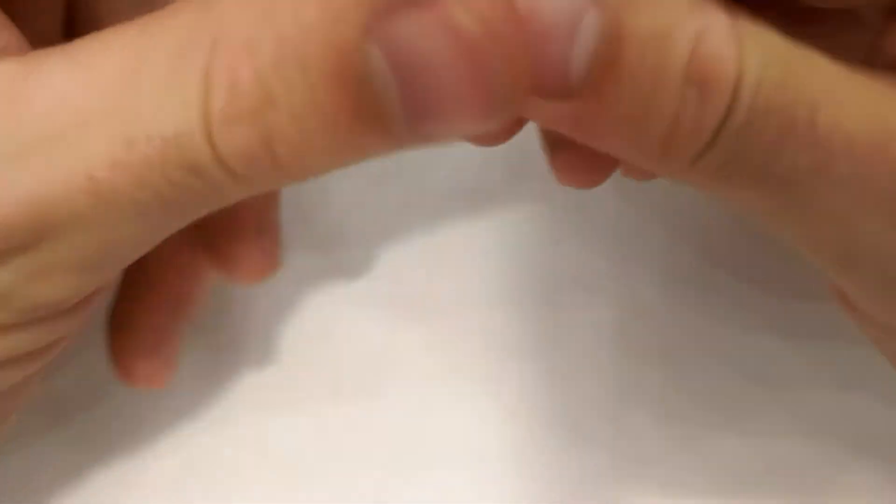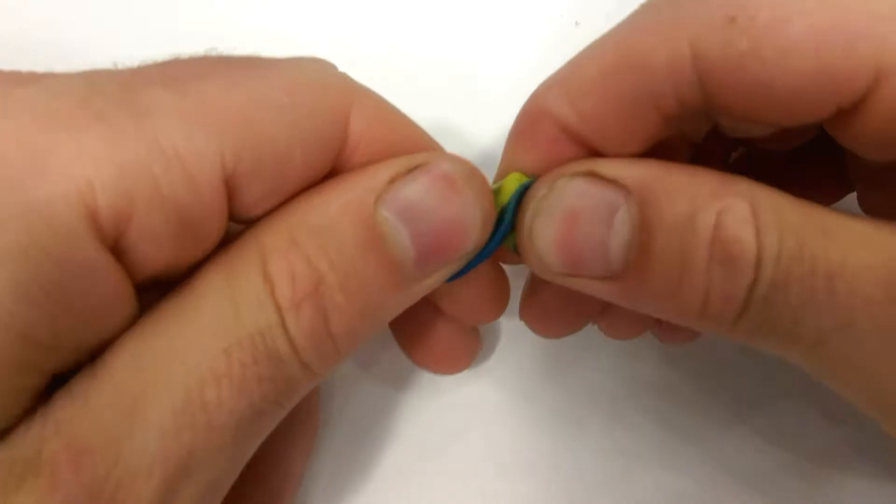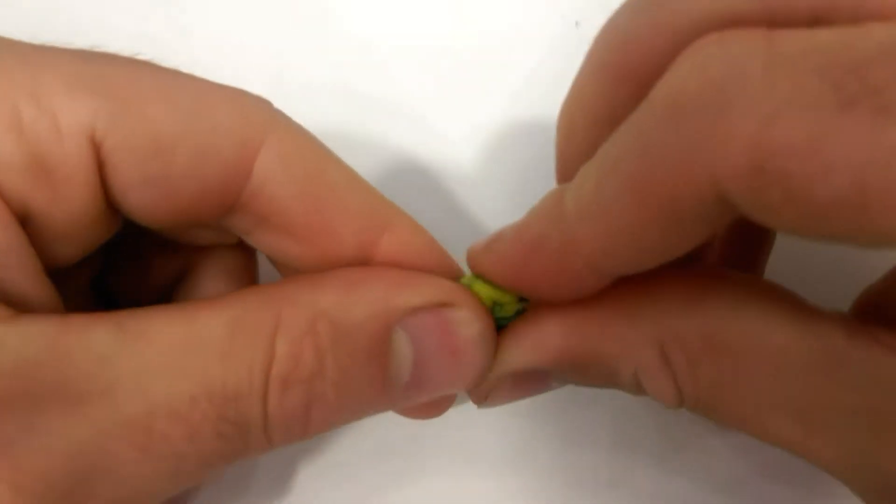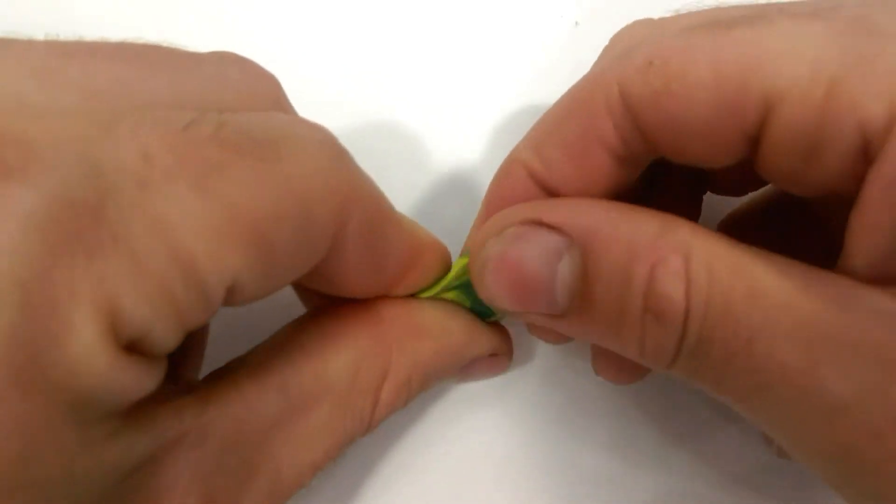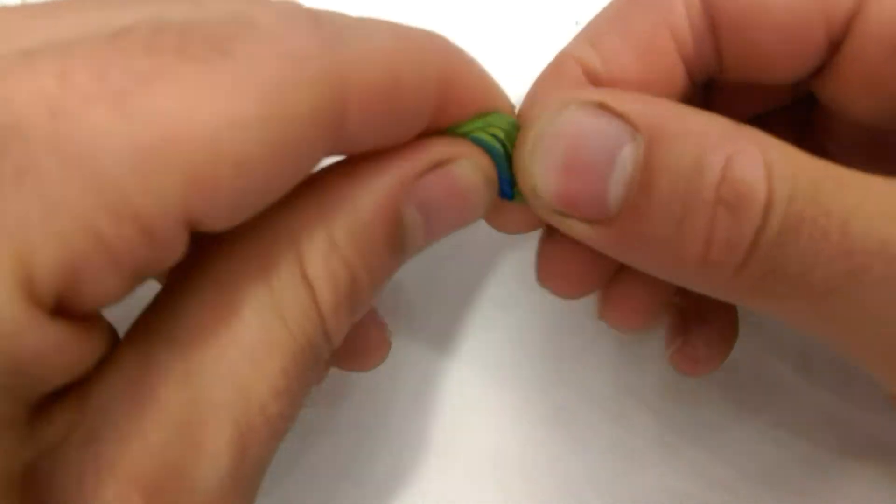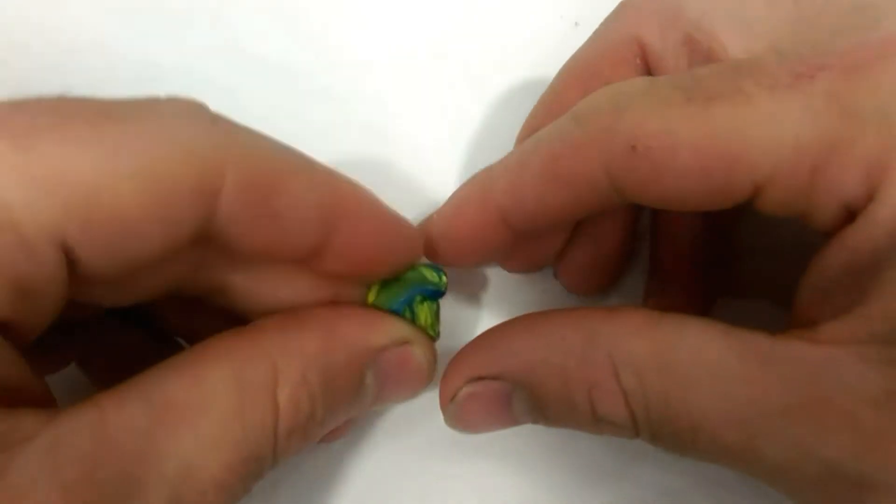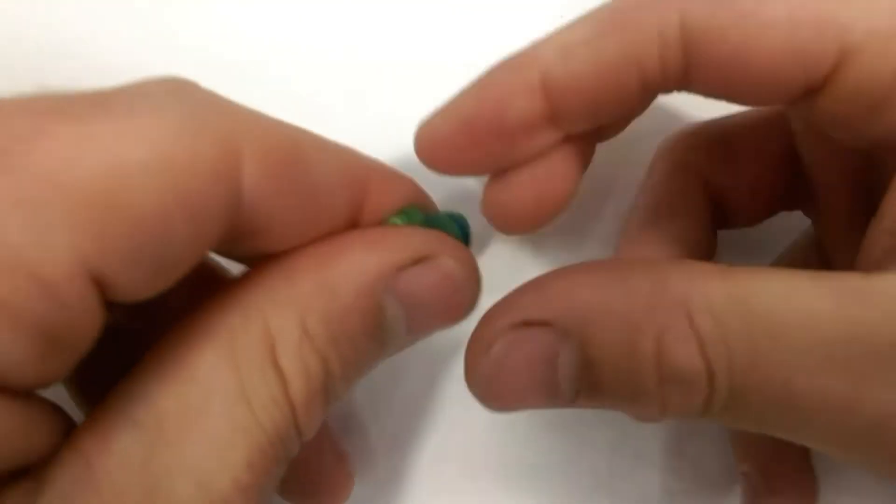When you try and pull it, you end up with this lump of crap, and it's completely useless. Always remove that piece before you start making anything, because otherwise if it breaks up it gets into your model.